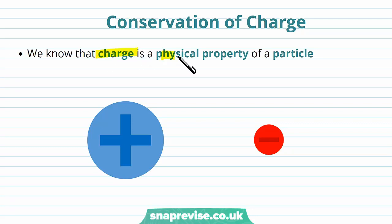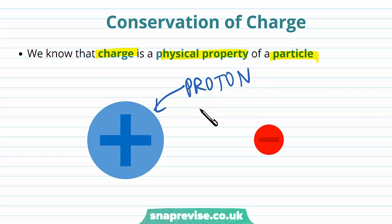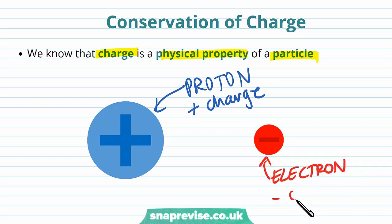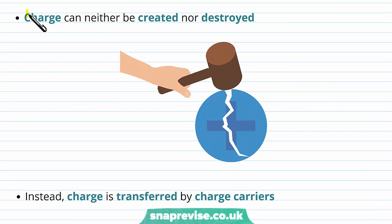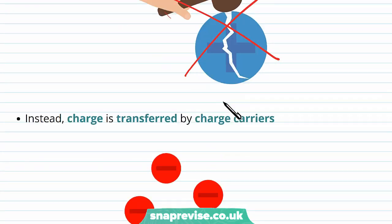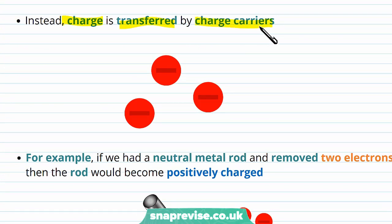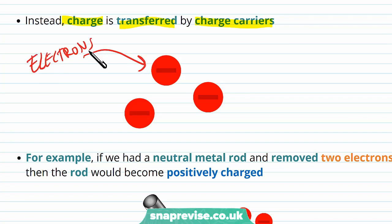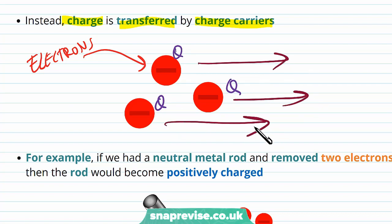We know that charge is a physical property of a particle. For example, we've encountered protons and these have a positive charge. We've also come across electrons, and these are charged particles with a negative charge. So charge comes as either positive or negative. Charge can neither be created nor destroyed. Instead, charge is transferred by charge carriers — these charge carriers could be electrons, for example. Electrons are charge carriers because they have a negative charge, so they're carrying a charge Q, and these electrons allow charge to be transferred. So it's not destroyed or created, it's only transferred.